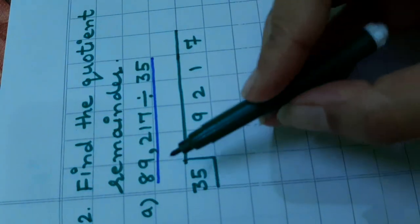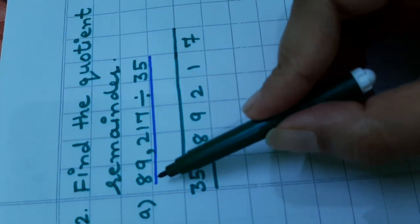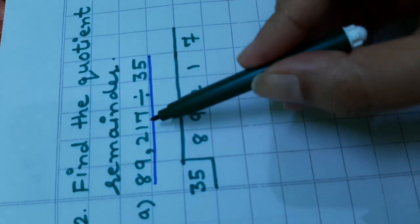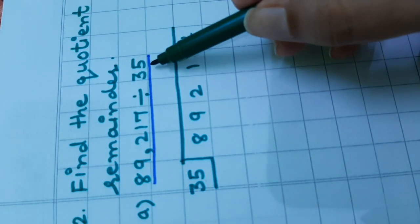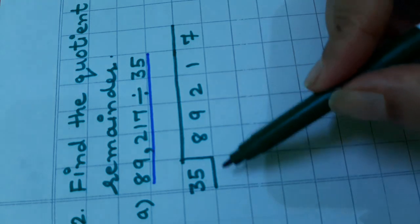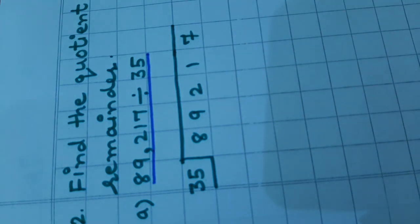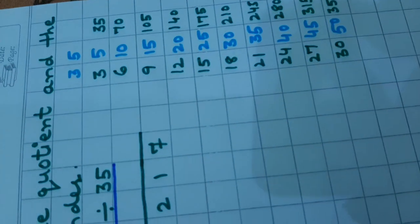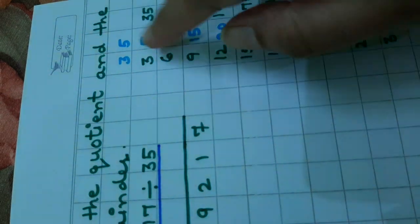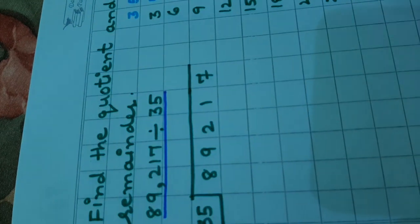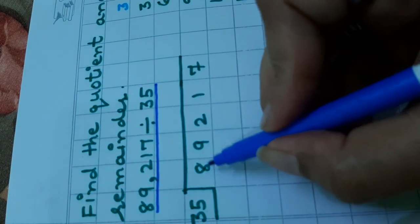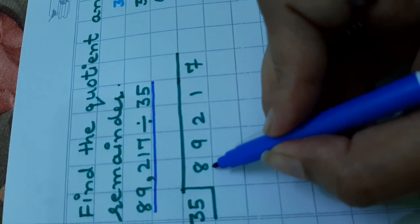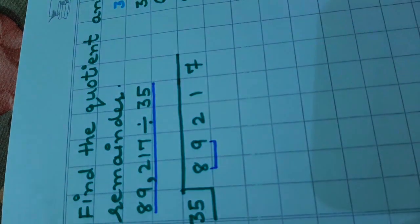Find the quotient and remainder. Here, the digit is 89,217 divided by 35. Arrange it in this pattern and because here our divisor is 35, so we will write the table for 35 here. Now, we will start from this left side and we will take these two digits, 89.